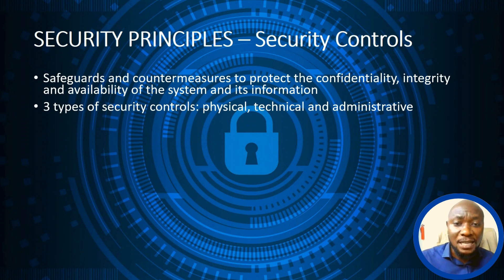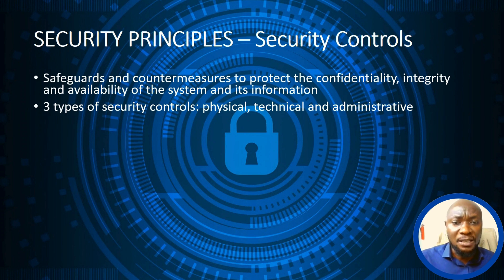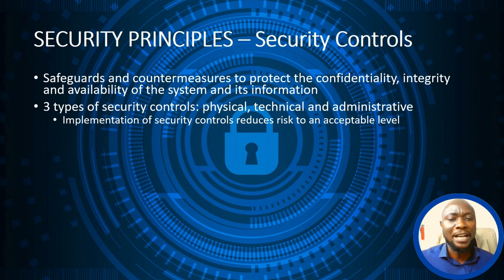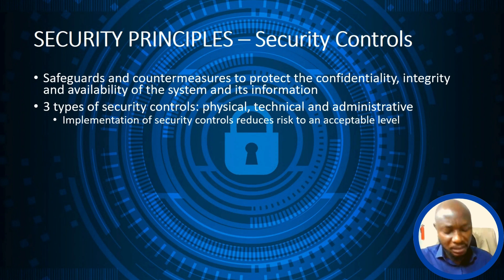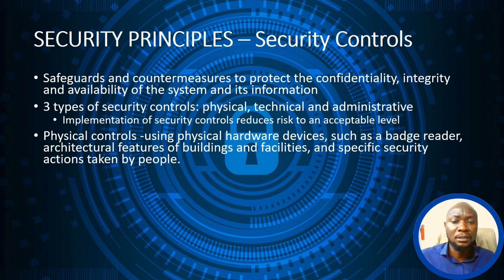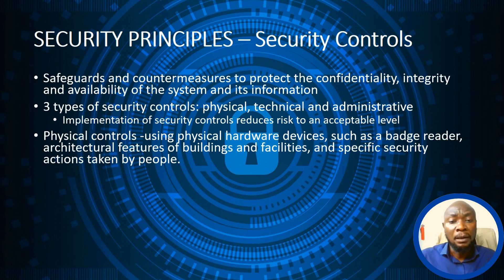Under the ISC2 Certified in Cybersecurity exam, there are three types of controls: Physical, Technical, and Administrative. Implementing security controls reduces risk to an acceptable level. Physical controls use physical or hardware devices such as badge readers, fences, barbed wire around facilities, security guards, or barriers to protect assets.